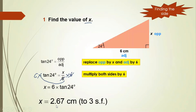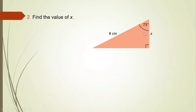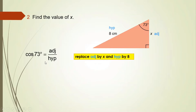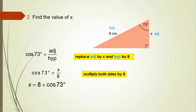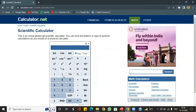Let us solve one more. Find the value of x where the angle is 73 degrees and x is the adjacent side, with hypotenuse 8. We use the cos ratio: cos 73 = adjacent/hypotenuse = x/8. Multiplying both sides by 8, we get x = 8 × cos 73. Using the calculator, 8 × cos 73 = 2.33.